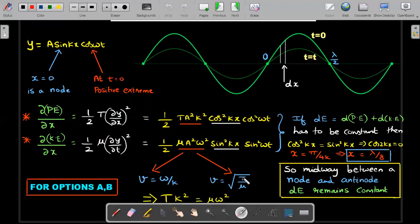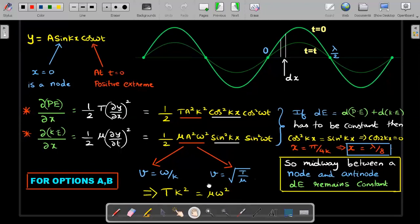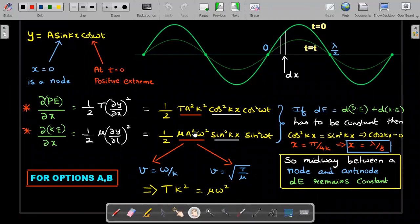Carefully observe: T times A² times k² and half mu times A² times omega² are actually equal. From the standard formula, v equals omega by k, and from string waves v equals square root of T by mu. Equate these two: T times k² equals mu times omega². So the constants are equal.